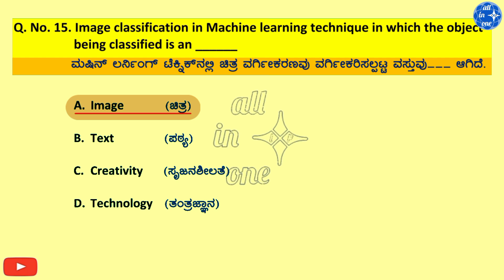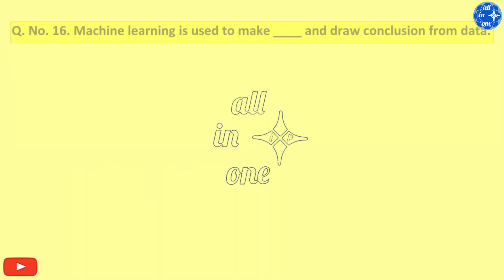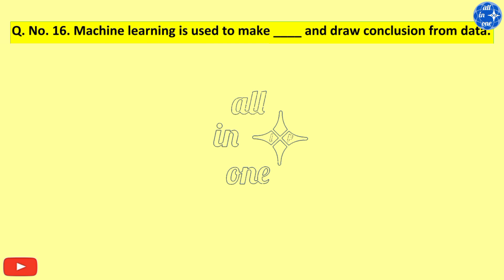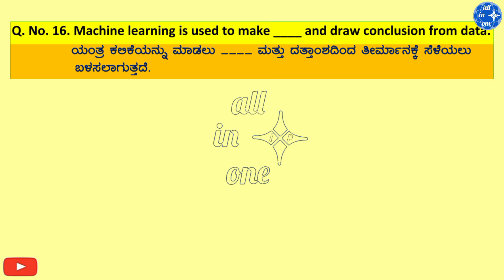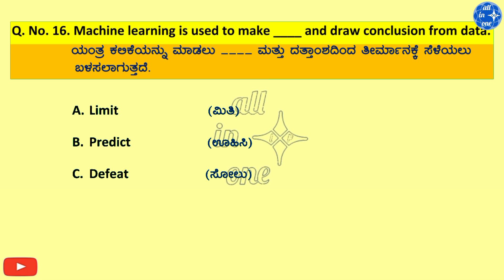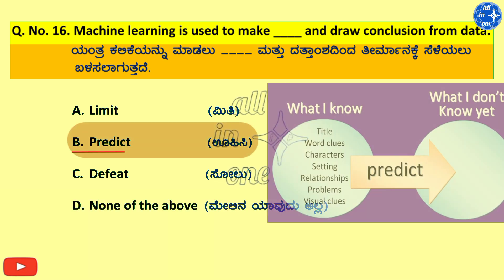Question number 16. Machine learning is used to make dash and draw conclusion from data. Options: A. Limit, B. Predict, C. Defeat, D. None of the above. Right answer is B. Predict.